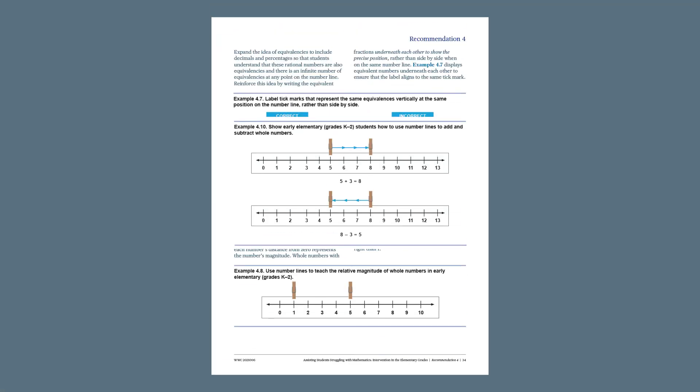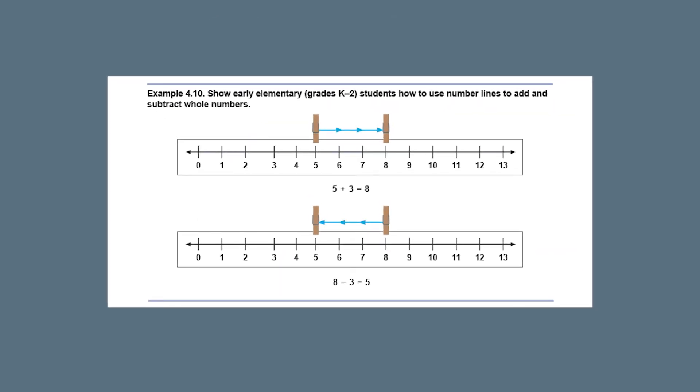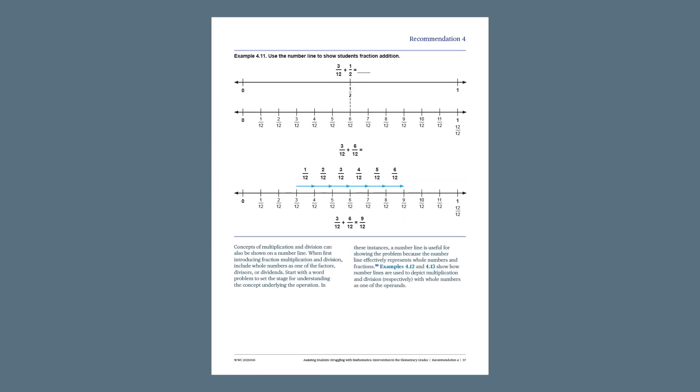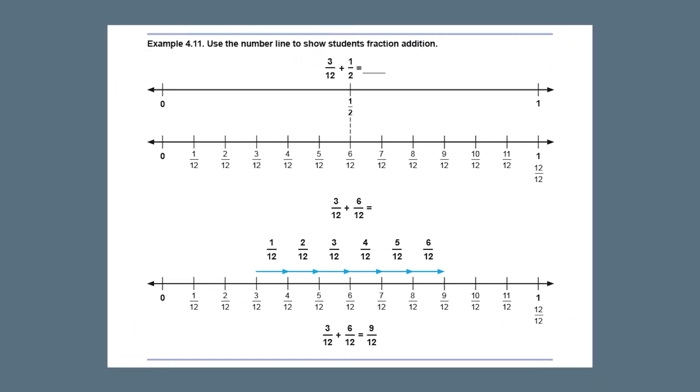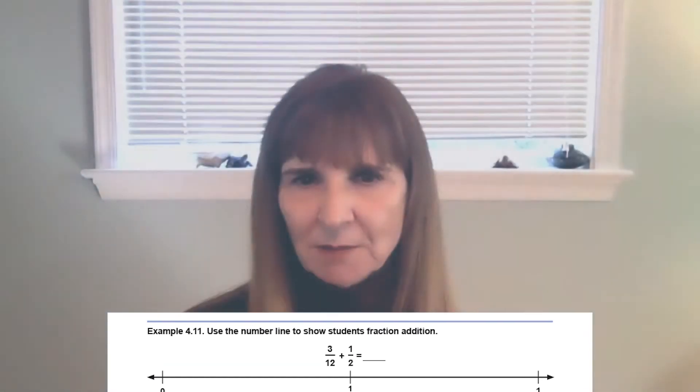The third action step is to use number lines to build students' understanding of the concepts underlying operations. For whole numbers, students can see addition and subtraction by moving distance on a number line. The same approach also works when adding fractions. Fractions may introduce additional complexity when two addends don't have the same denominator. When this happens, number lines are a powerful visual that is useful for finding an equivalent fraction so that students can successfully solve the problem. Number lines are important because they are a mathematically accurate representation and are used across advanced mathematics.